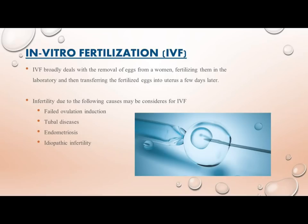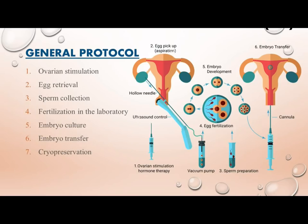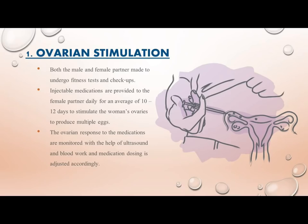In Vitro Fertilization (IVF): IVF broadly deals with the removal of eggs from a woman, fertilizing them in the laboratory, and then transferring the fertilized eggs into the uterus a few days later. Indications include failed ovulation induction, tubal diseases, endometriosis, and idiopathic infertility. The general protocol includes: ovarian stimulation, egg retrieval, sperm collection, fertilization in the laboratory, embryo culture, embryo transfer, and cryopreservation. Step 1 — Ovarian Stimulation: both partners undergo fitness tests and checkups; injectable medications are given to the female partner daily for an average of 10–12 days to stimulate the ovaries to produce multiple eggs, monitored by ultrasound and blood work.